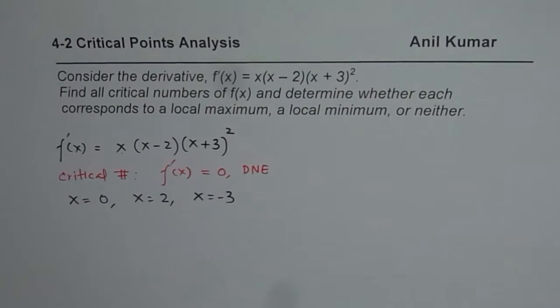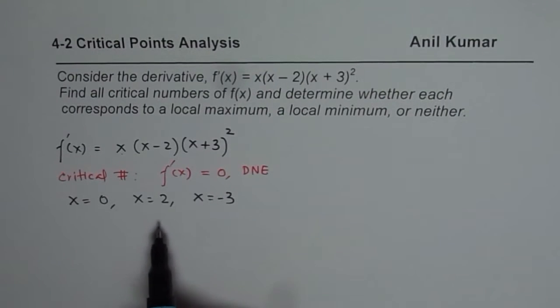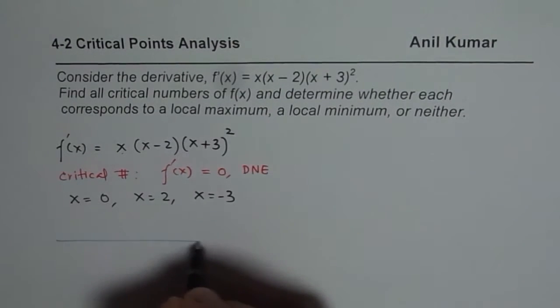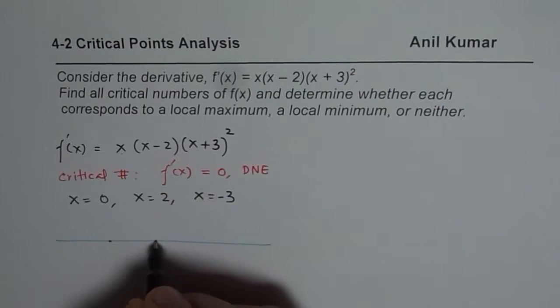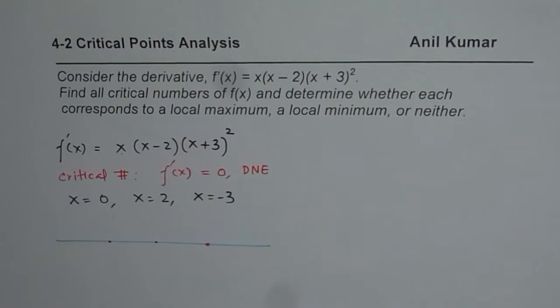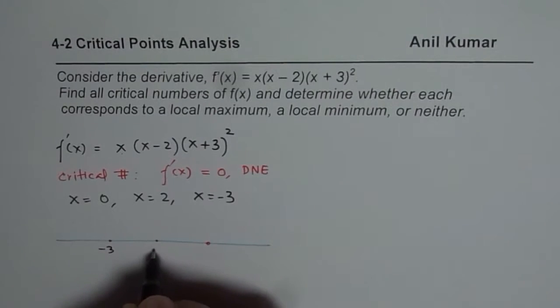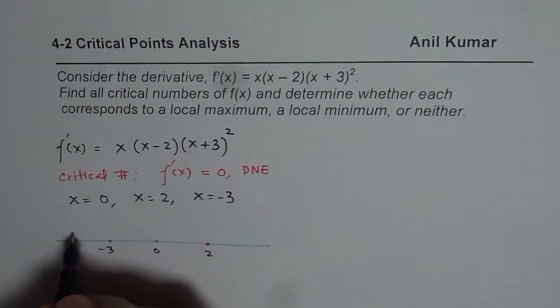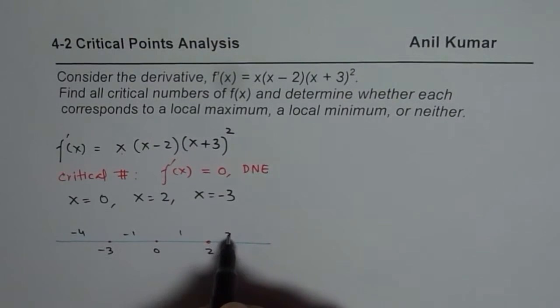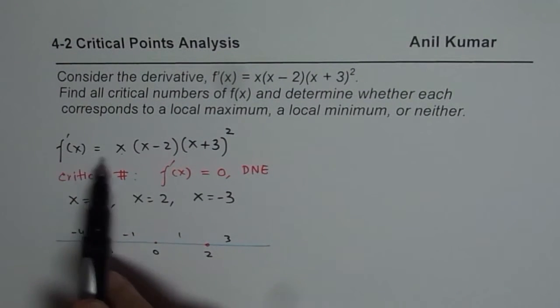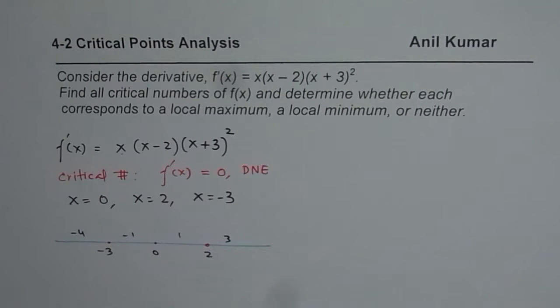Now, the question is whether these critical numbers correspond to local maximum, local minimum or neither. You can have an algebraic approach - you could take test points on either side of these critical numbers. We have three critical numbers: -3, 0 and 2. So, we can take test points, let's say, -4, -1, 1 and 3 and check whether your derivative is positive, negative or what in that interval.